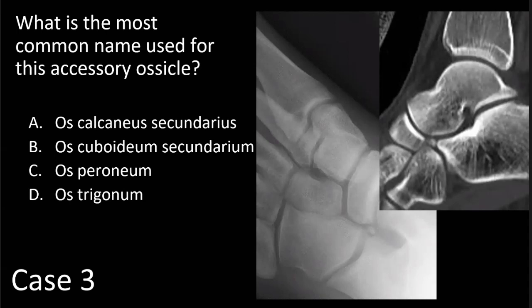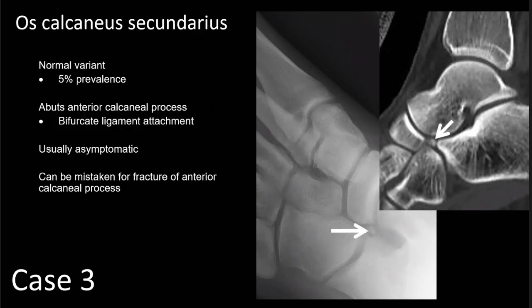What is the most common name used for this accessory ossicle? Os calcaneus secondarius, os cuboideum secondarium, os peroneum, or os trigonum? The answer is os calcaneus secondarius. This is a normal variant with a 5% prevalence. It abuts the anterior calcaneal process in the region of the bifurcate ligament attachment, usually asymptomatic. It's important to be aware of this entity because it can be mistaken for fracture of the anterior calcaneal process, so recognize that well-corticated margin of both the ossicle itself and the anterior process of the calcaneus.